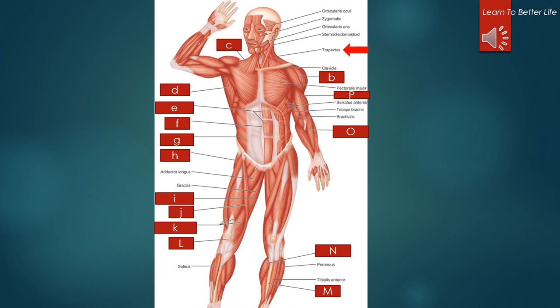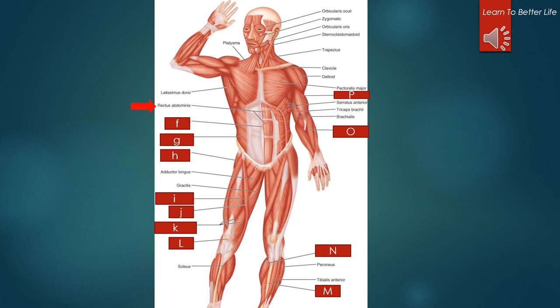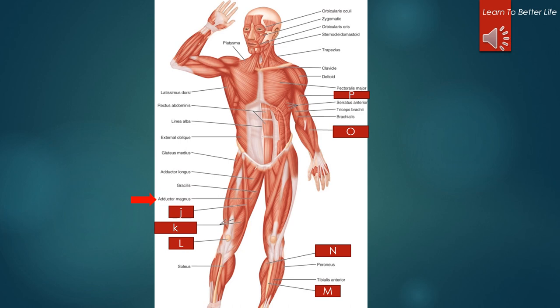A is the trapezius. B is the deltoid. C is the platysma. D is the latissimus dorsi. E is the rectus abdominis. F is the linea alba. G is the external oblique. H is the gluteus medius. I is the adductor magnus. J is the sartorius.